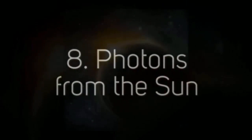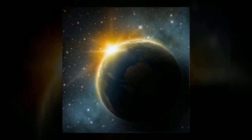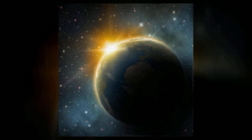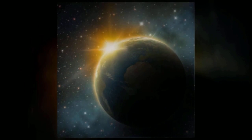While it only takes 8 minutes and 19 seconds for the light from the surface of the Sun to reach Earth, it actually takes about 10,000 to 170,000 years for a photon to travel from the core of the Sun to its surface.